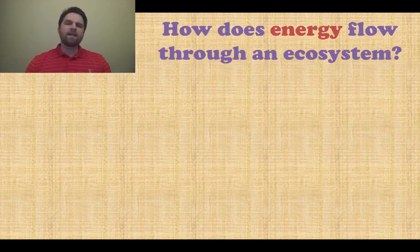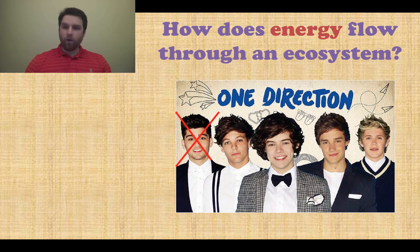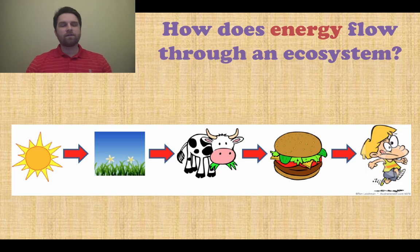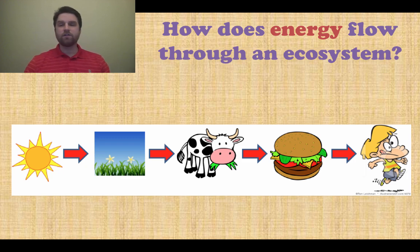So how does energy flow through an ecosystem? It flows in one direction. Sunlight gives energy to plants, which gives energy to a cow, for example, which then provides energy in a hamburger eaten by a boy, who then has energy to run. It all flows in one direction — it does not go in multiple different directions.